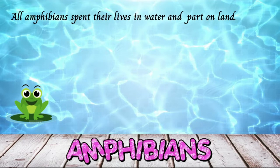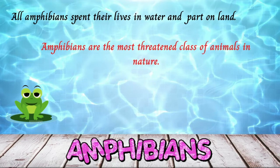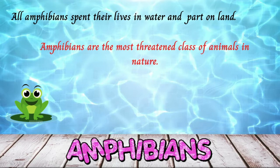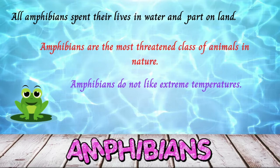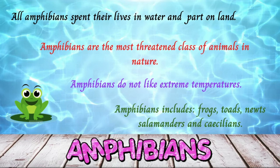Let's now have a closer look at amphibians. All amphibians spend part of their lives in the water and part on land. Amphibians are the most threatened class of animals in nature because of their porous eggs and semi-permeable skins. Too much sun can damage their cells and too much wind can dry their skin, causing dehydration. Amphibians do not like extreme temperatures, which is why many of them hibernate. Amphibians include frogs, toads, newts, salamanders, and caecilians.